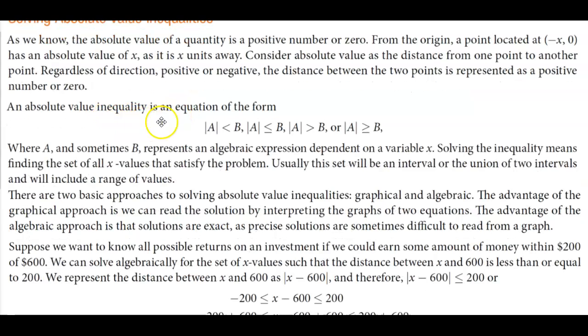An absolute value inequality is an equation of the form |a| < b, or |a| ≤ b, or |a| > b, or |a| ≥ b.